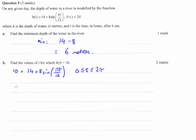Let's get sine of pi t on 12 by itself. So 10 minus 14 is negative 4, divided by 8 gives you negative 1 half.